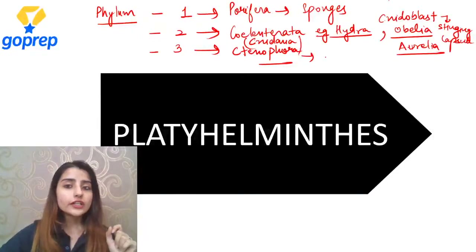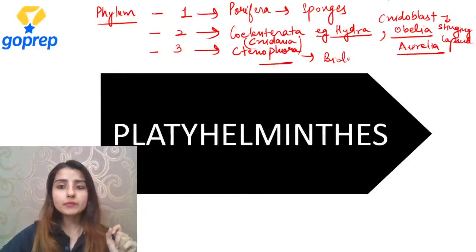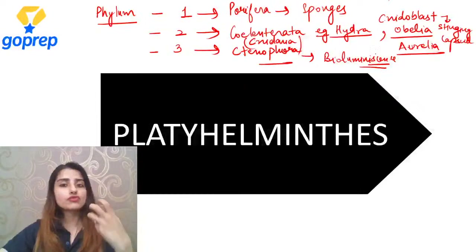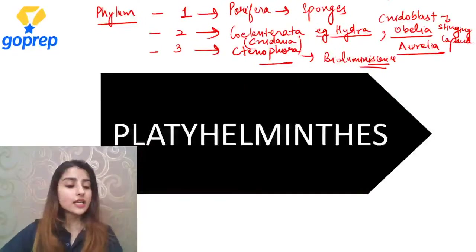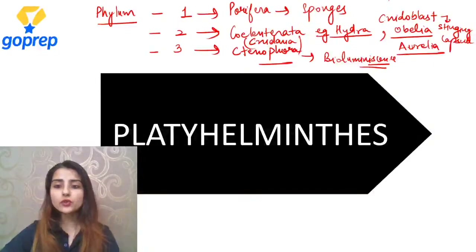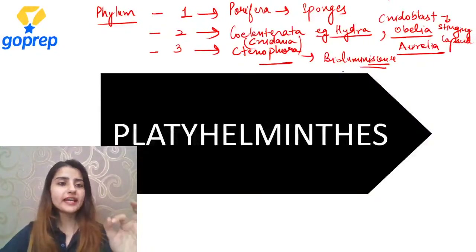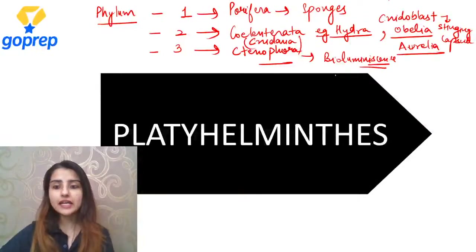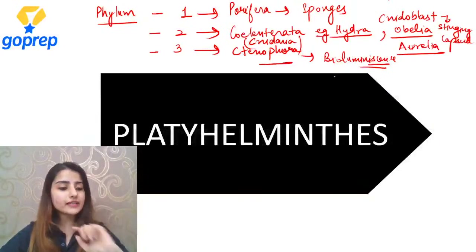Then came Ctenophora. Ctenophora ki sabse badi property kya thi? Bioluminescence. Being a living organism, they used to emit light. That property is called bioluminescence. It's okay Khushbu, we have just started. I was just revising what we had discussed in the last three classes. Chalo, start karte hain with our next phylum.